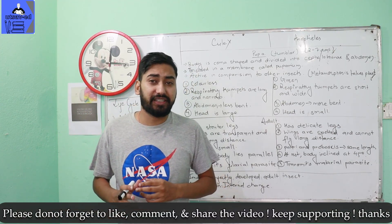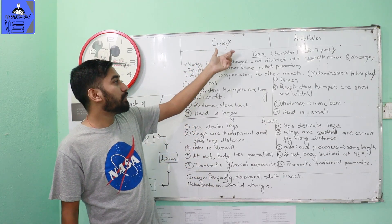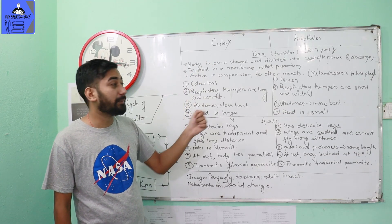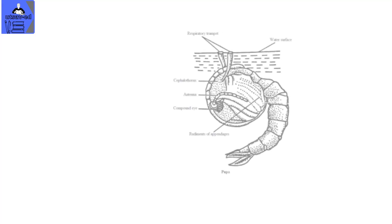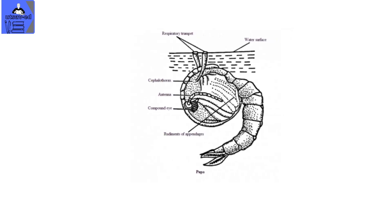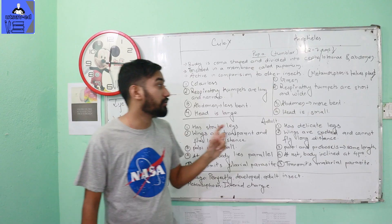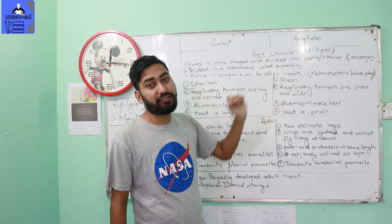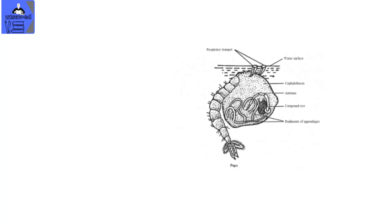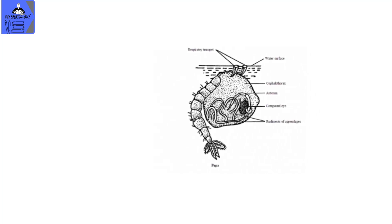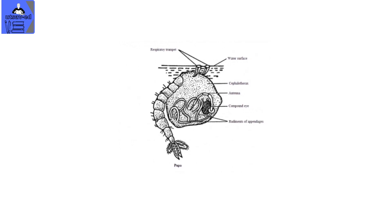There are different tissue differences, involving tissue differentiation and organogenesis. Culex pupae are colourless, with respiratory trumpets that are long and narrow, and the abdomen is less bent. Anopheles pupae are green in colour, with respiratory trumpets that are very wide. The abdomen is more bent in Anopheles. The head is small in Anopheles pupa.